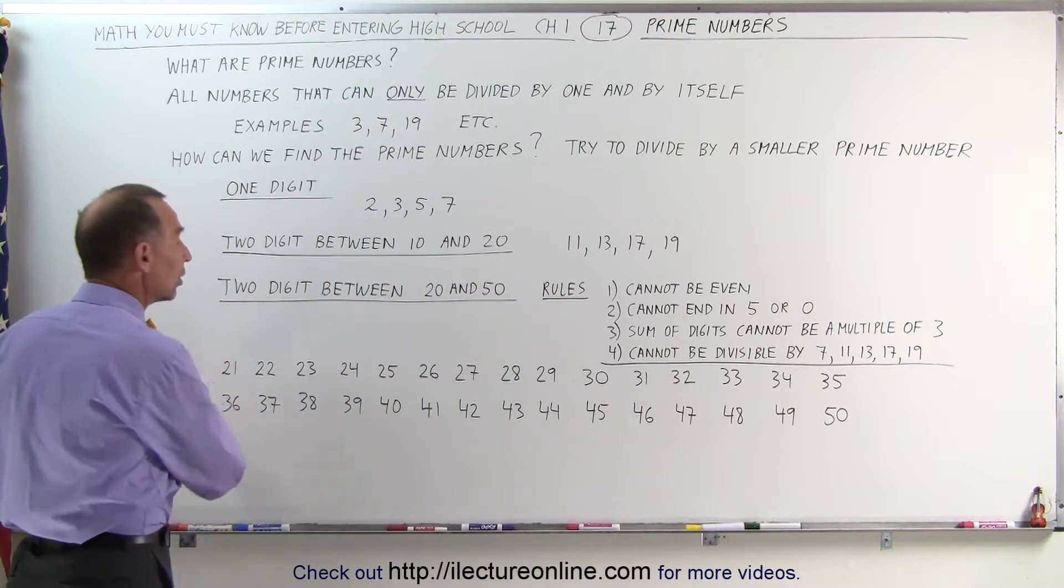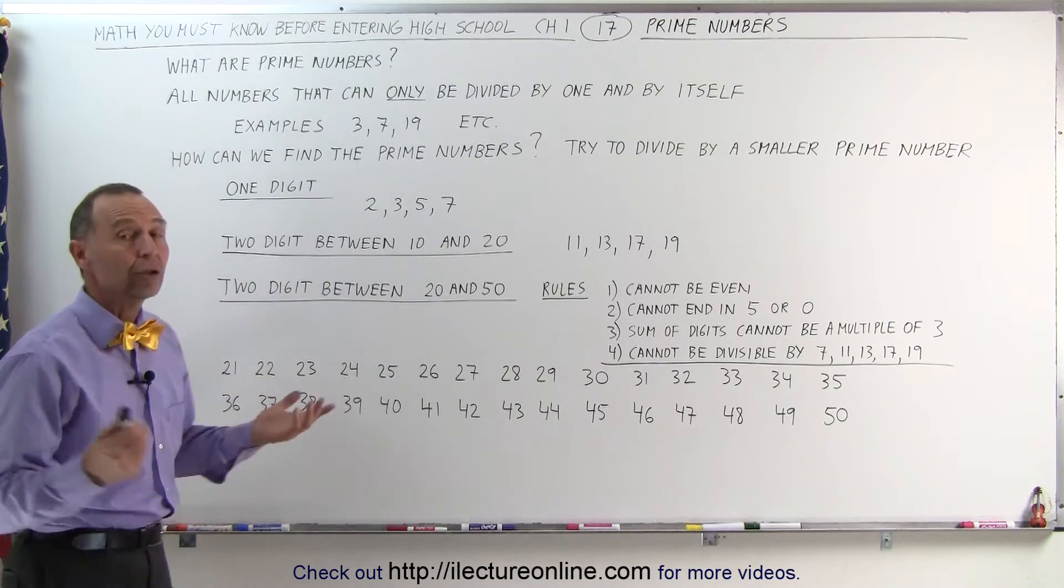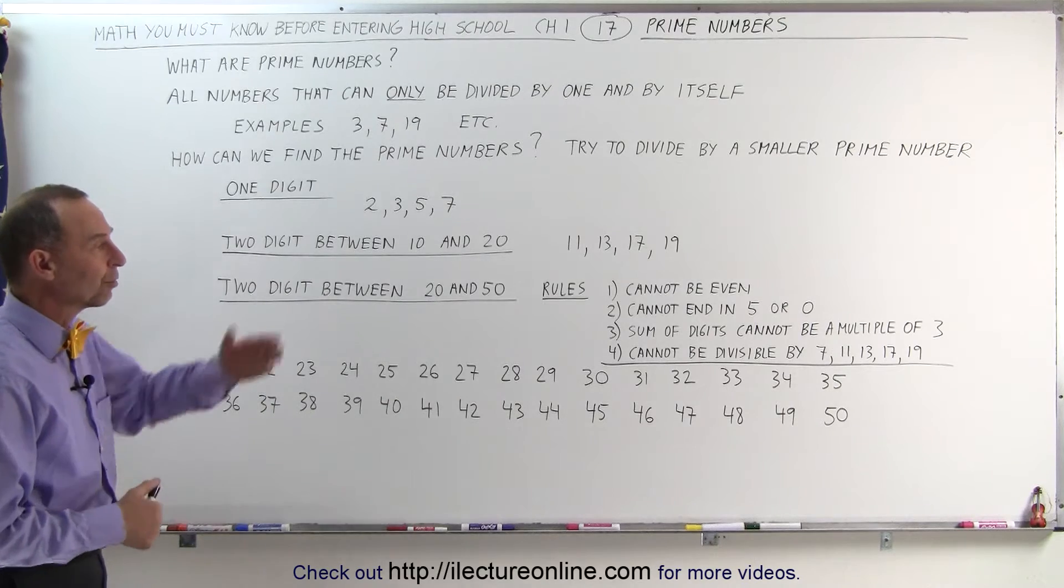So here are the numbers from 21 to 50. Let's quickly determine which of these are prime numbers following the rules.